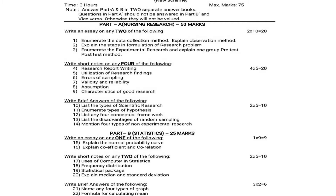For brief answers, they will give 5 questions and you have to answer all 5. Each question carries 2 marks, so 2 into 5 equals 10 marks. Question 10: List the types of scientific research. Question 11: Enumerate the types of hypothesis. Question 12: List any 4 conceptual frameworks. Question 13: List the disadvantages of random sampling. Question 14: Mention 4 types of non-experimental research. That completes Part A, which is Nursing Research.